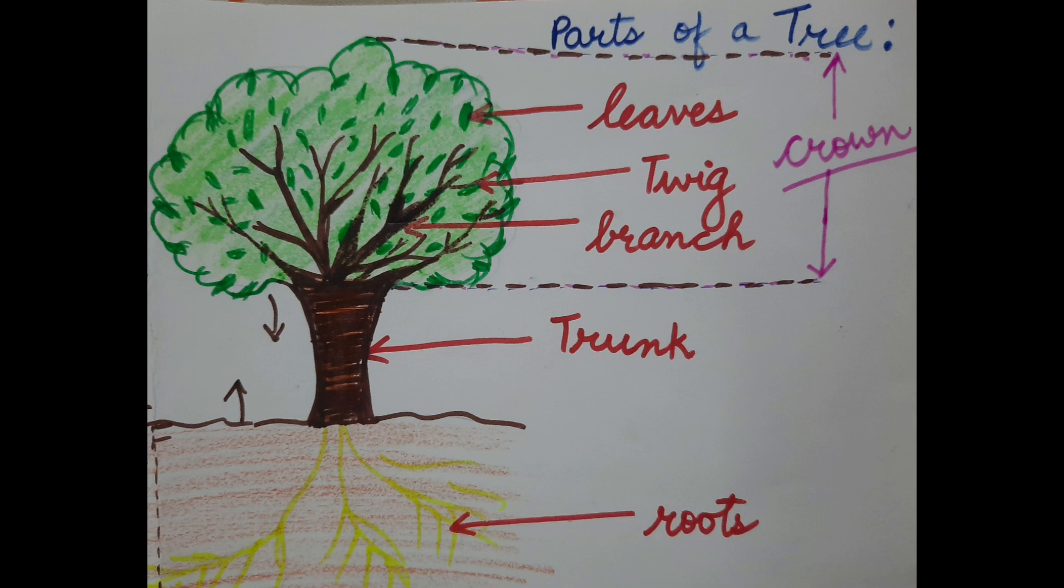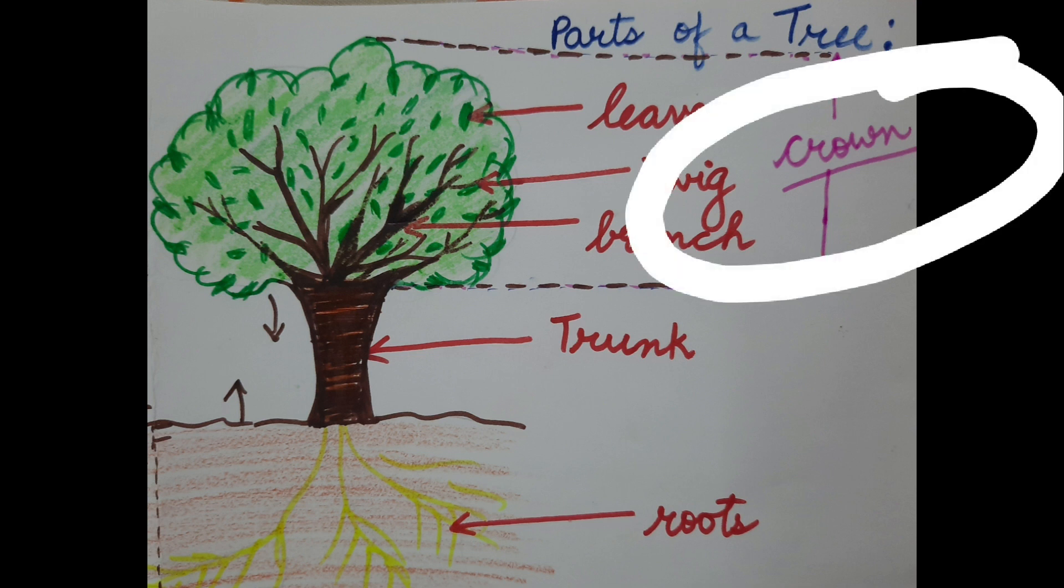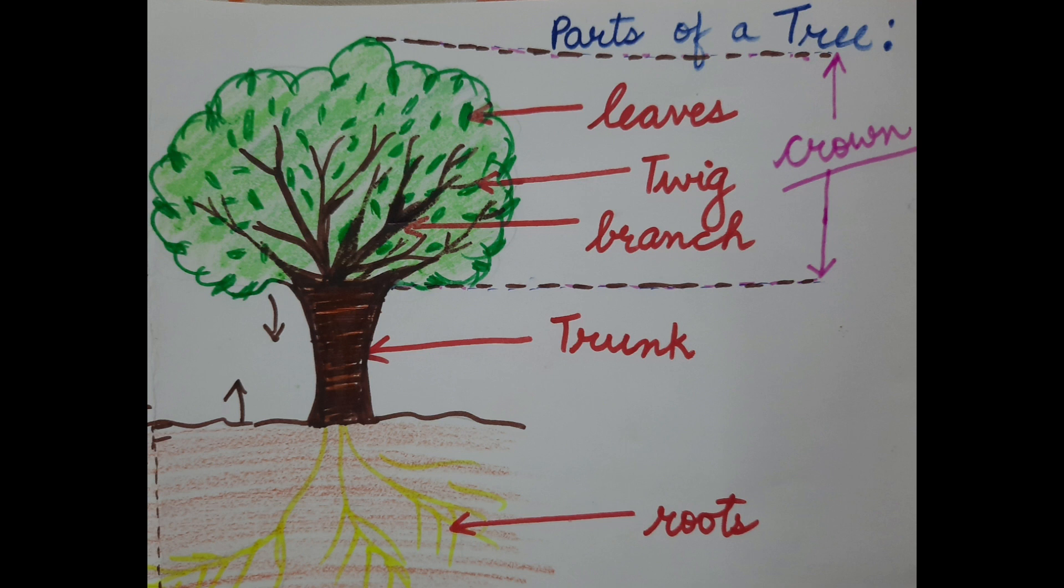Now, the next part we will talk about is the crown. The crown is made of leaves, branches, twigs and sometimes it also contains the fruits.